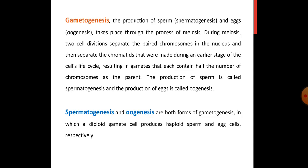Gametogenesis is the process in which spermatogenesis and oogenesis are involved, that is the production of sperms and eggs that takes place through the process of meiosis. Meiosis is the cell division in which the 2N number of chromosomes are divided and the daughter cells contain haploid number of chromosomes. There are two types of cell divisions: mitotic division and meiotic division, that is mitosis and meiosis.